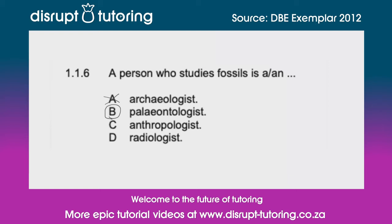And let me just go through the reasons why it's not C or D. It's not C, Anthropologist, because an anthropologist is a scientist who studies the development and behaviors of humans throughout the world, both in current times and past times, and it helps them get a better understanding of humanity as a whole. And it's not D, Radiologist, because a radiologist is a medical scientist who specializes in using medical machinery to help diagnose illnesses.